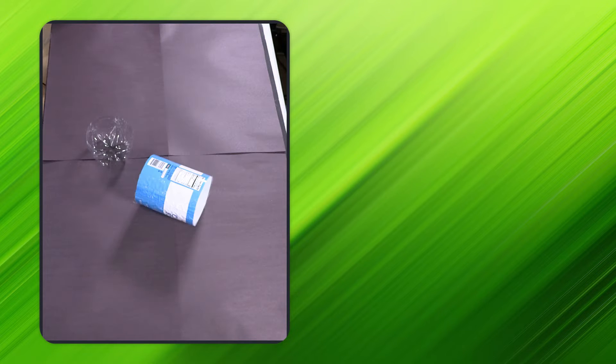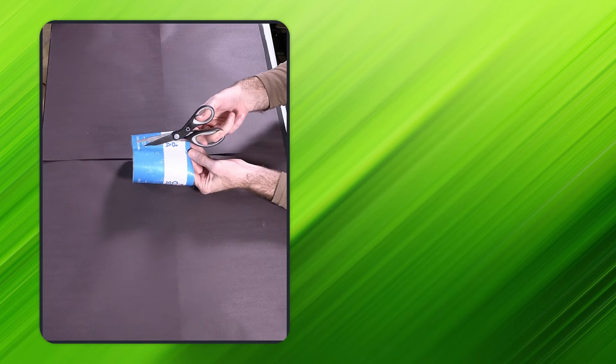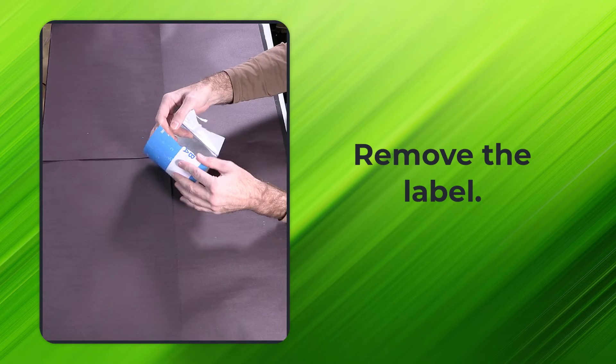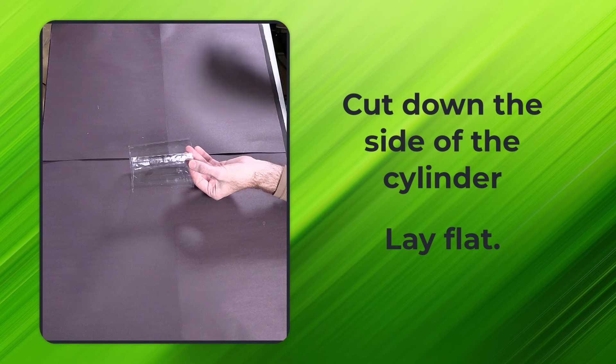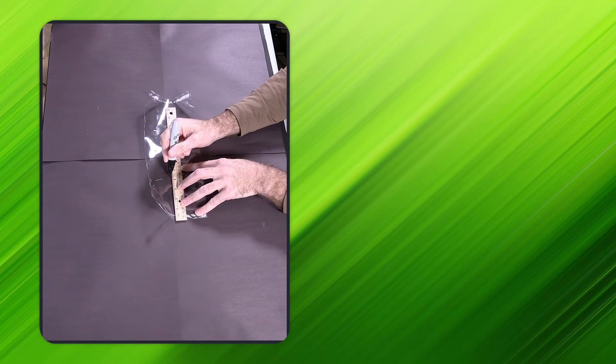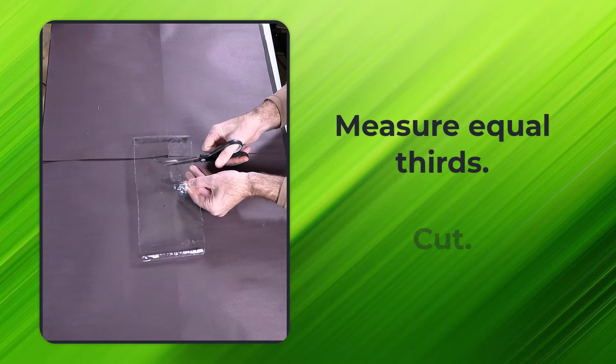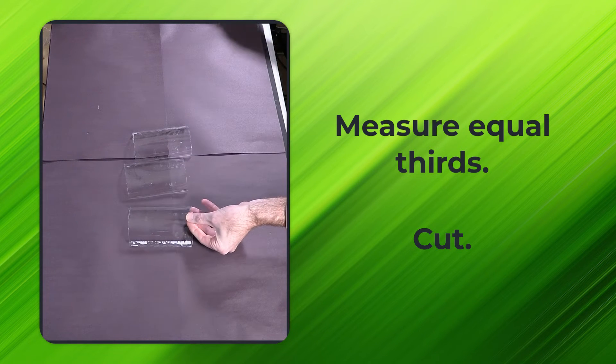Now let's take the bottle cylinder that we made from the second bottle and turn that into the panels that we need for our trap. Remove the label from the cylinder as best you can, cut down the side of the cylinder, and lay it flat. Now use a ruler to measure equal thirds and cut. These three pieces will become the three panels of your trap.